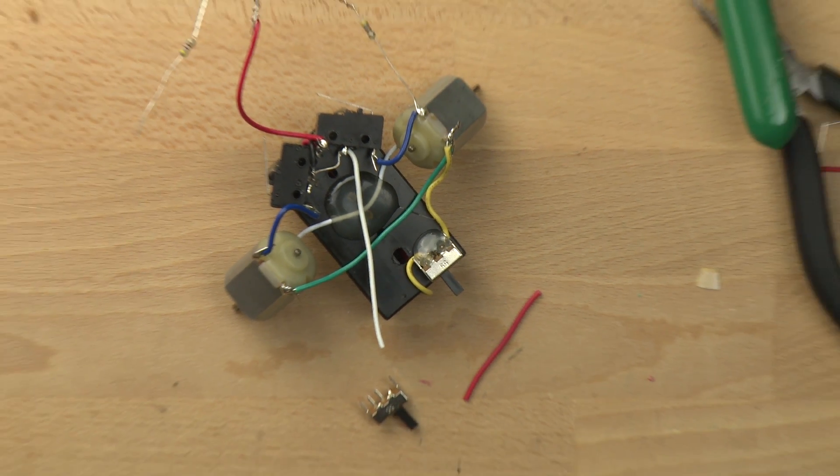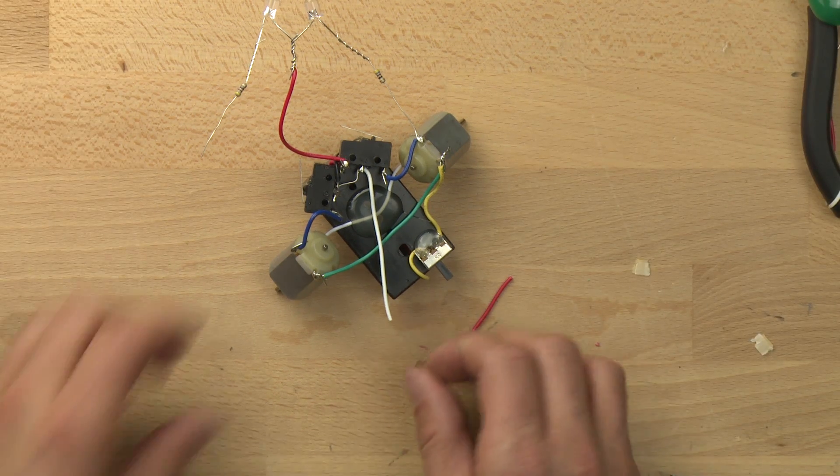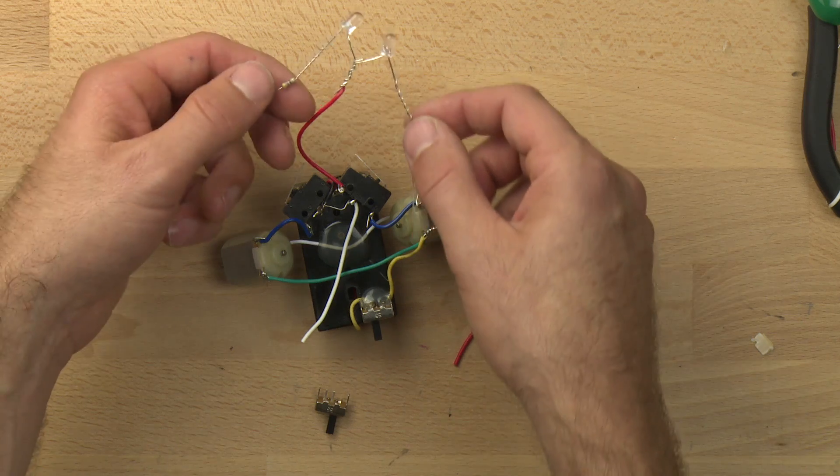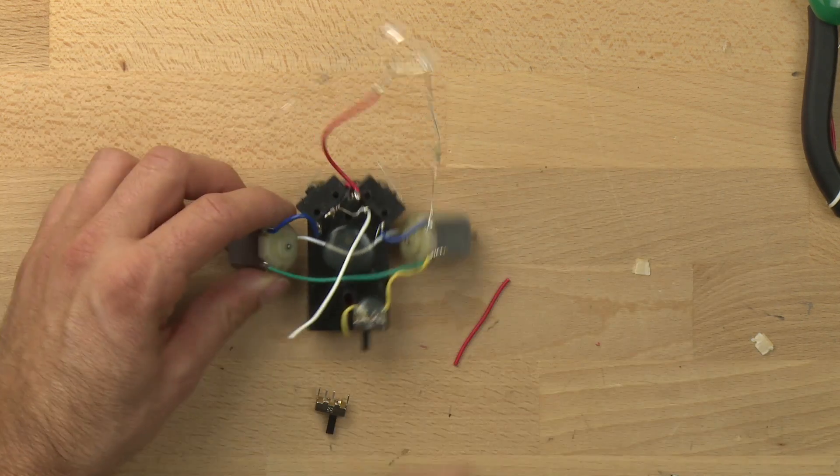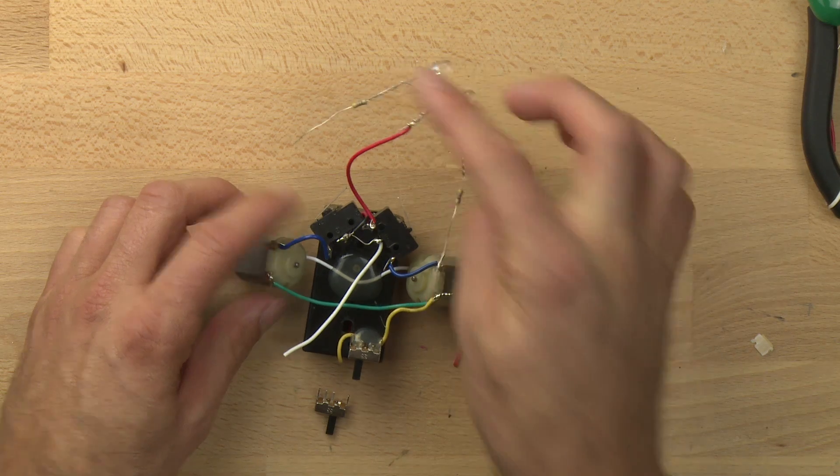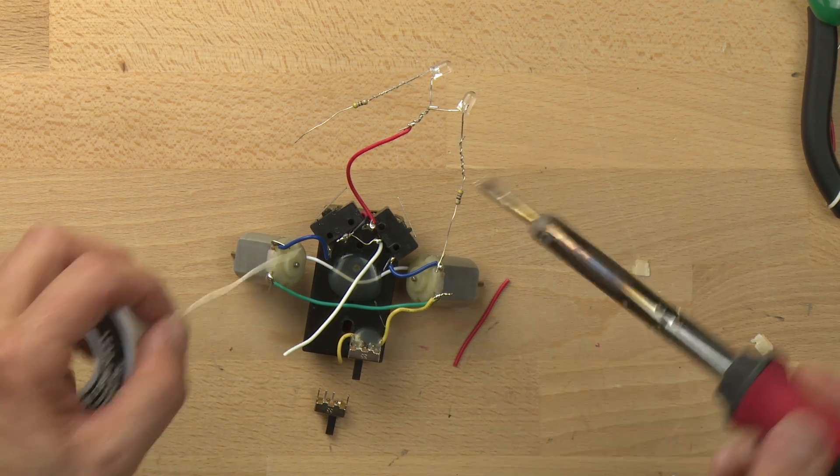In order for this switch to turn on and off our LED eyes, we need to connect it from the negative through this to the positive. Before we do that, let's go ahead and put some solder on the connections here to make sure that they don't come apart on our LEDs.